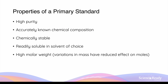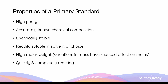Ideally, the chemical should also have a high molar weight or molecular weight. Because the number of moles is given by mass divided by molar mass, when a chemical has a relatively large molar mass, any changes in its measured mass correspond to a smaller change in the number of moles. This reduces the impact of small mass deviations — limited by the precision and accuracy of the balance scale — on the final moles of the primary standard dissolved.